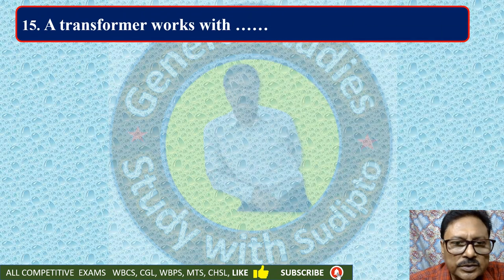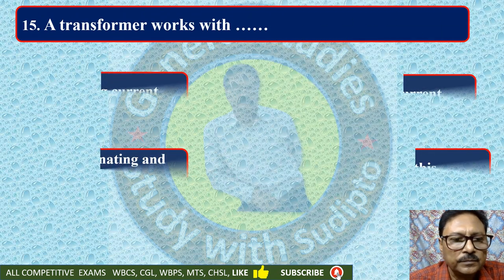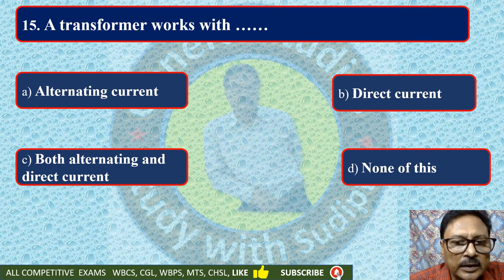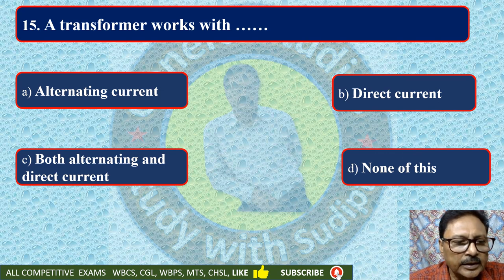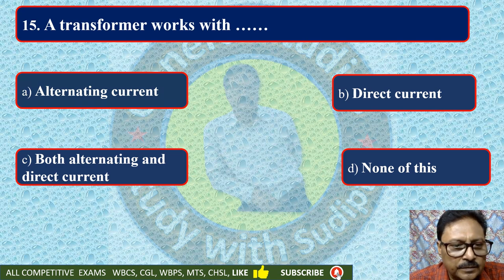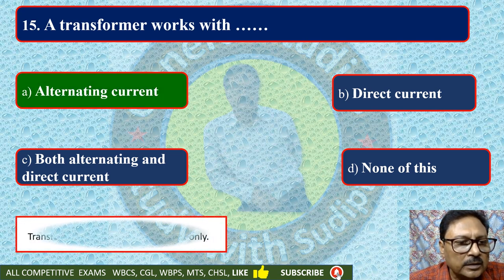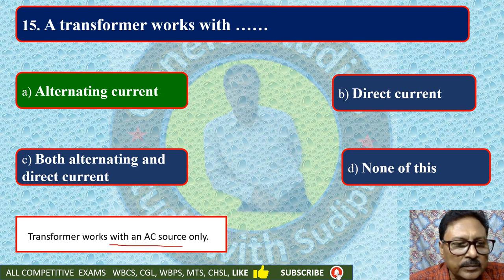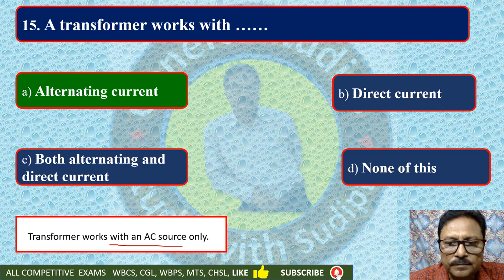A transformer works with — alternating current, direct current, both alternating and direct current, or none of these. The answer is alternating current. Transformer works with AC, that means alternating current, source only.